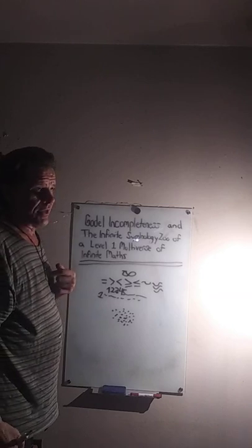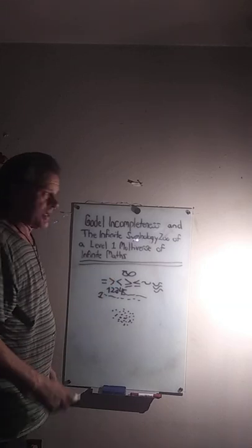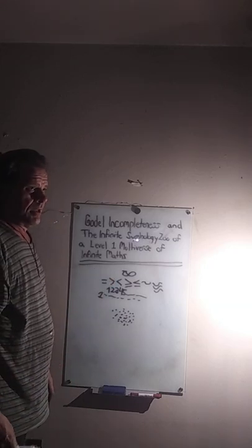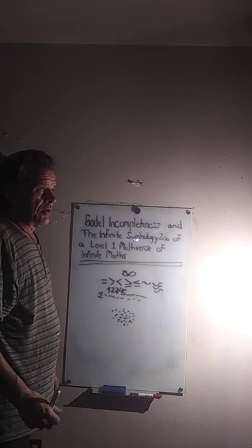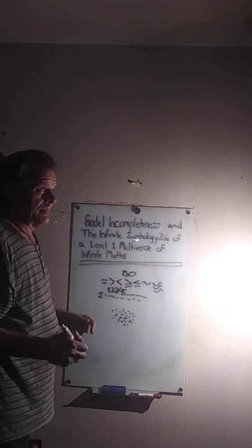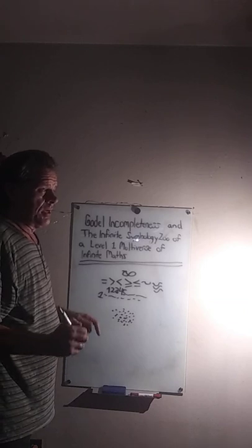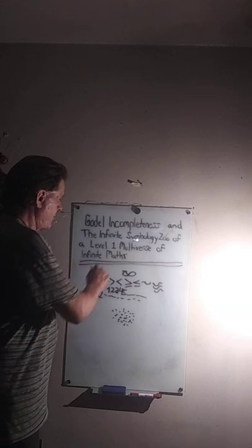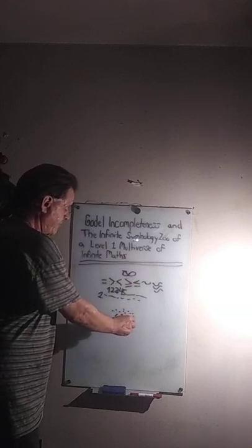We're symbolic creatures. We think of symbols. When we write them down, give them to other people, there's no way that the last mathematician could convey, even to themselves, the completeness of an infinite, repeating level one multiverse of infinite hidden states of math.